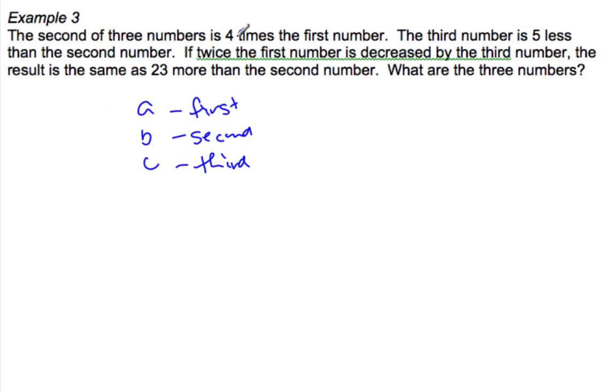The second of three numbers is four times the first. So the second is four times the first, which means four times number one equals number two. That's my first equation. I have three variables. How many equations do I need? We're going to need three.